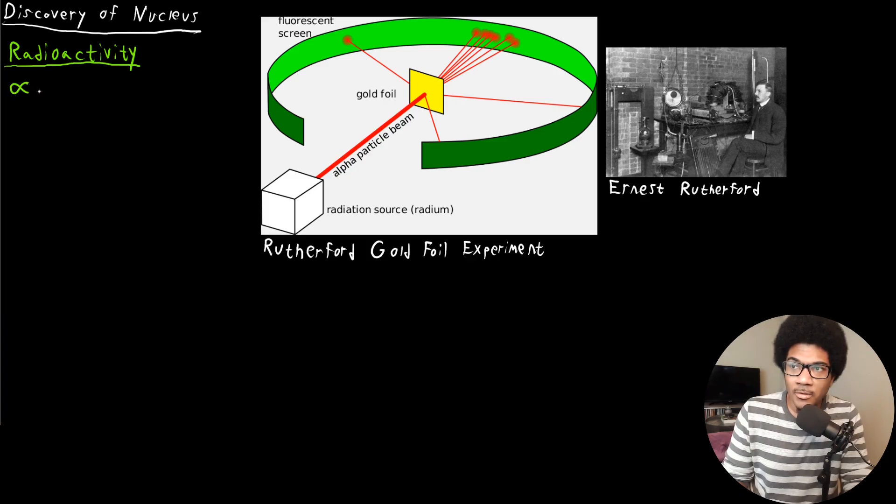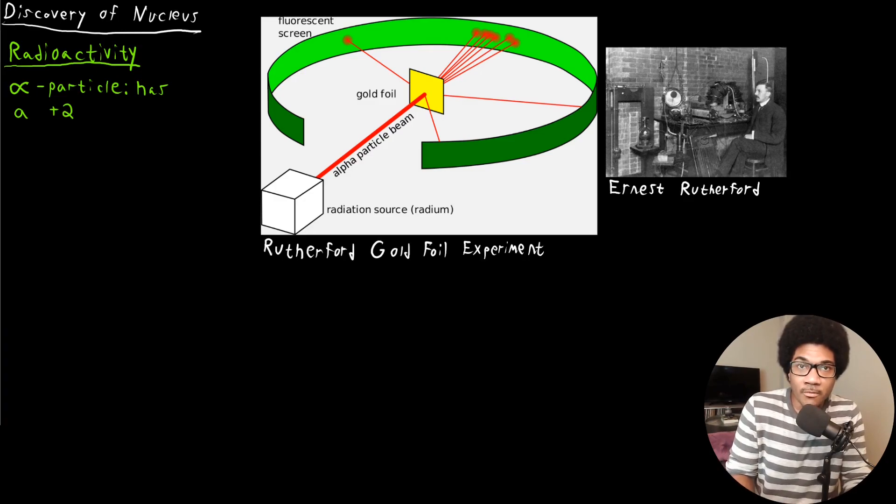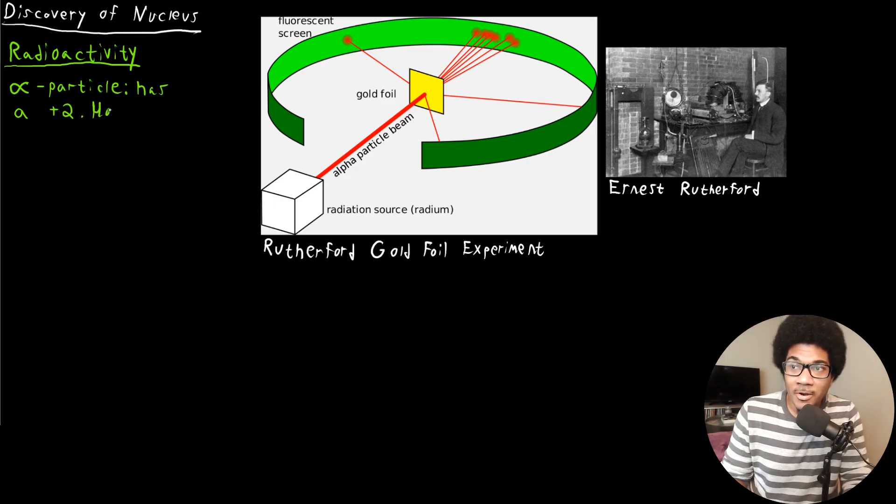So an alpha particle. So this is the Greek letter alpha. There's two things you need to understand about an alpha particle. First, it is a particle with a plus two charge. So it has a plus two overall charge. So it's a very highly positively charged particle, but also that it has a mass. It's very large on a subatomic scale. So it has a mass that is over 7,000 times larger than an electron.